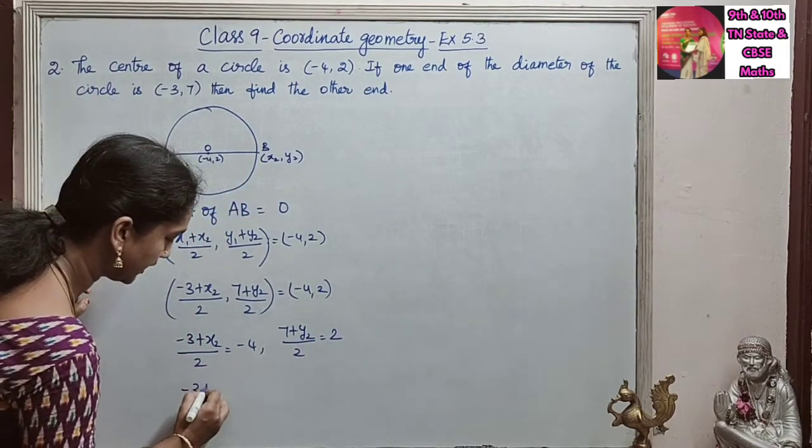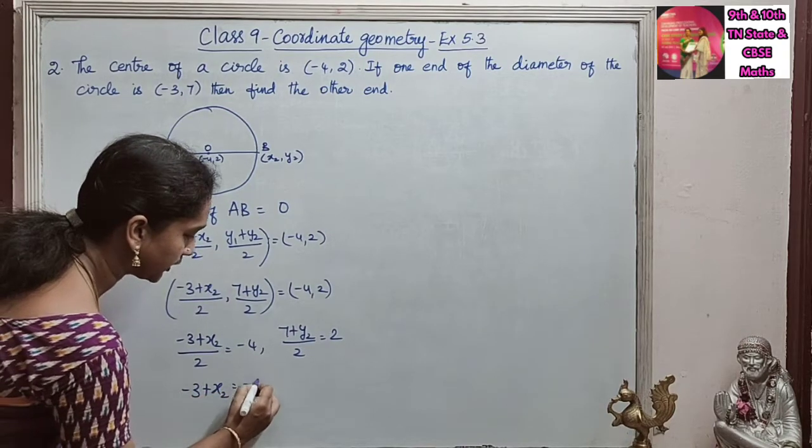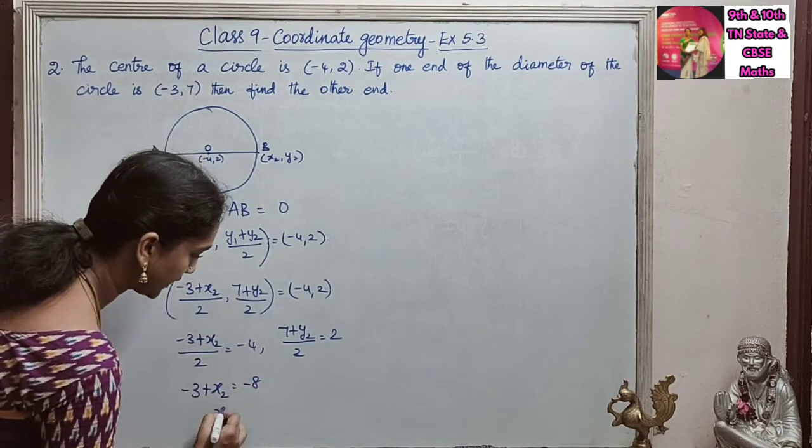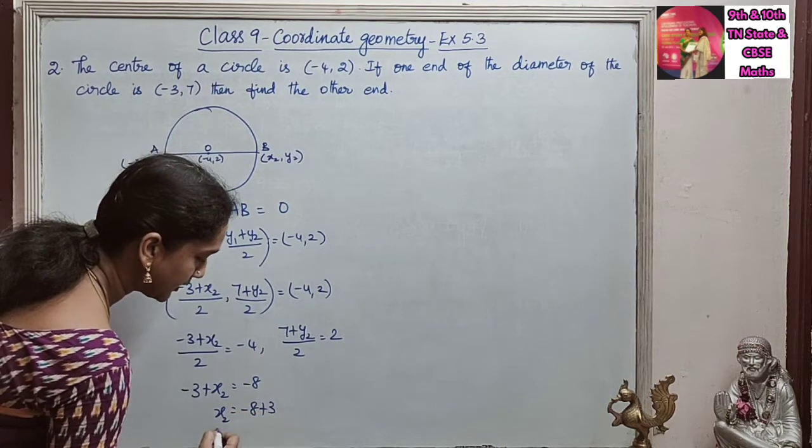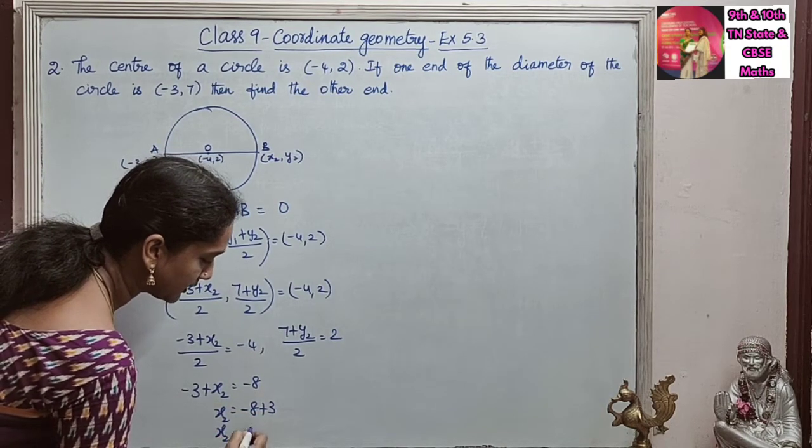So -3 plus X2 is equal to -8. So X2 is equal to -8 plus 3. So X2 is -5.